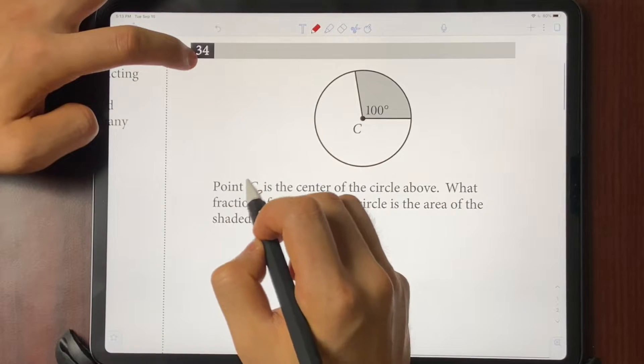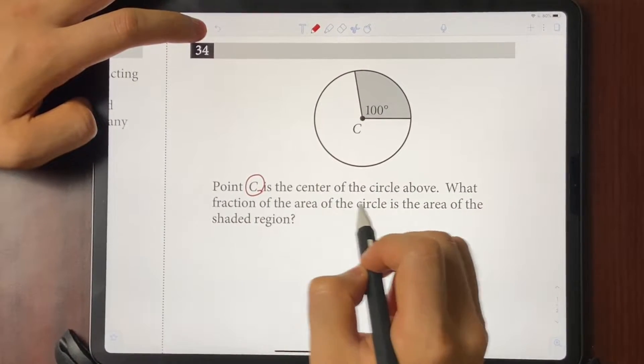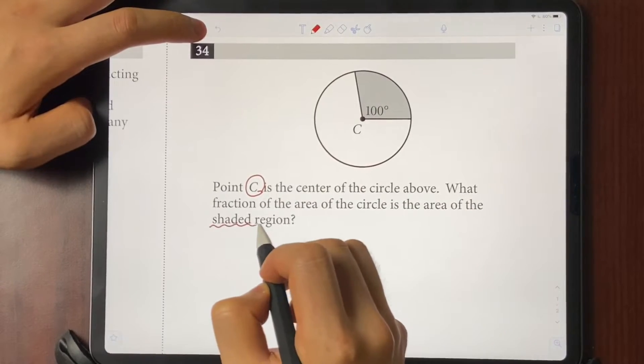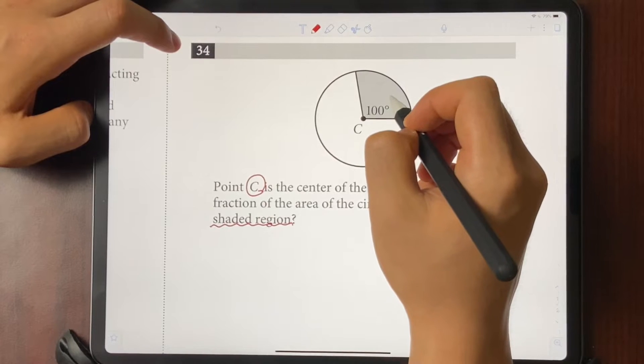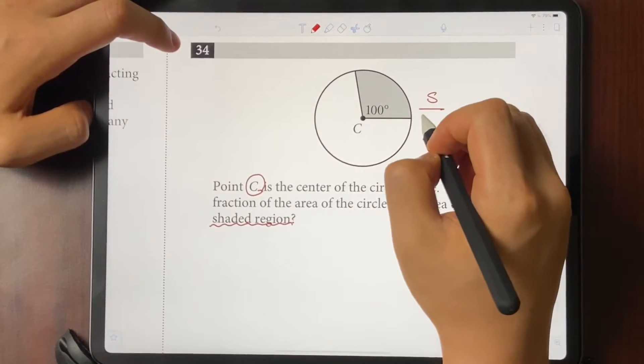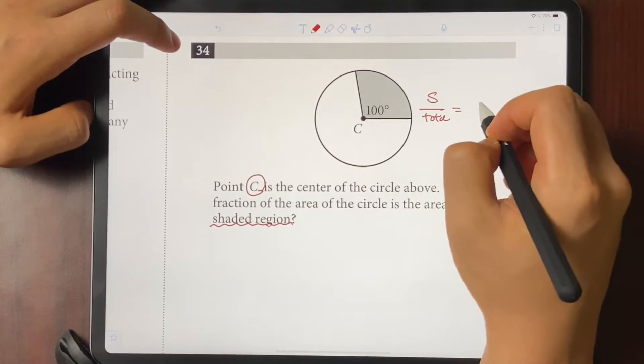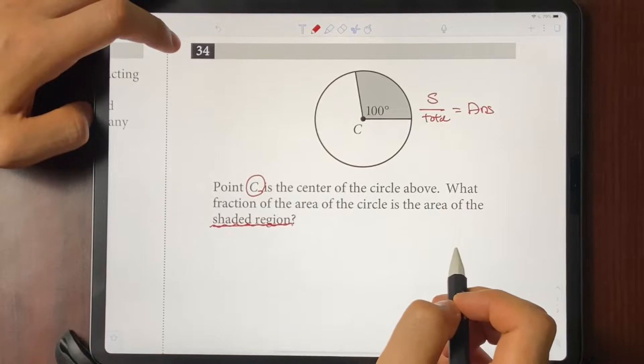Let's get to the video. So the question says, point C is the center of the circle above. What fraction of the area of the circle is the area of the shaded region? So essentially what we're looking for is what fraction of the circle is the shaded region? And how you would find that is by putting the shaded region over the total. And if you simplify it, that would give you the answer, which is going to be the fraction of the shaded region.